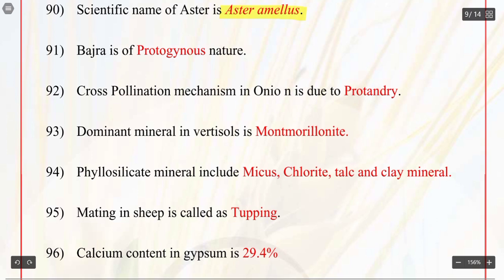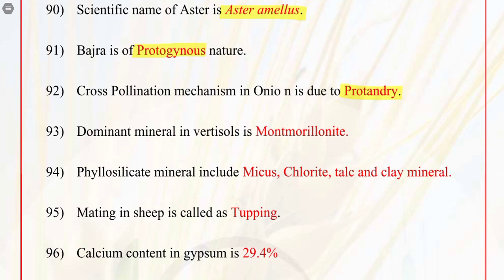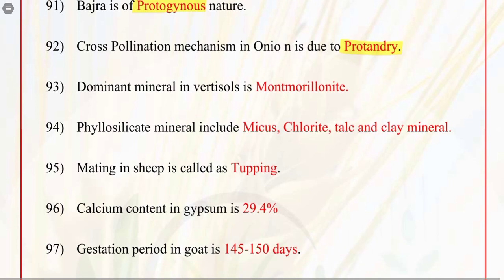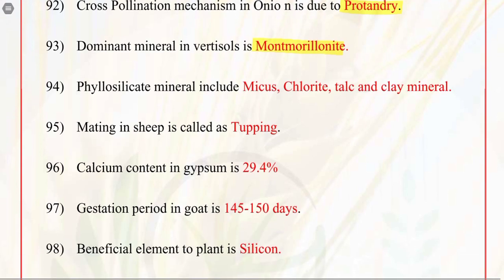Q91. Bajra is of protogynous nature. Q92. Cross-pollination mechanism in onion is due to protandry. Q93. Dominant mineral in vertisol is montmorillonite. Q94. Phyllosilicate minerals include micas, chlorite, talc, and clay minerals.